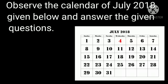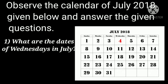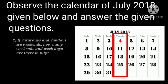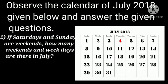Observe the calendar of July 2018 given below and answer the questions. The first question is: what are the dates of Wednesday in July? Let us search the Wednesday column and find out the dates. The dates of Wednesdays in July are the 4th, 11th, 18th, and 25th of July.